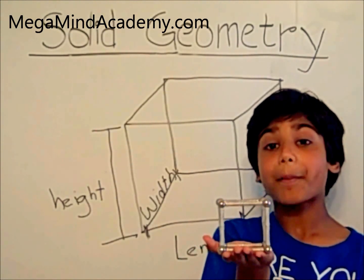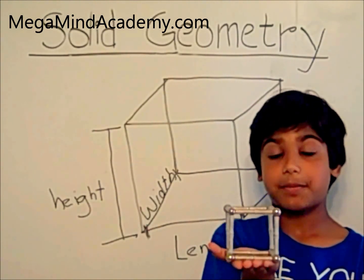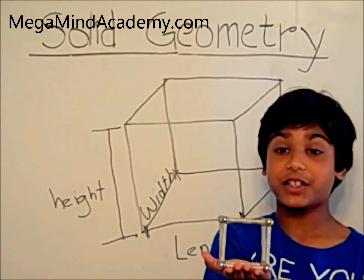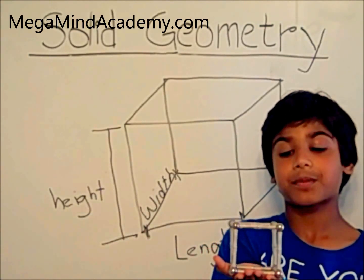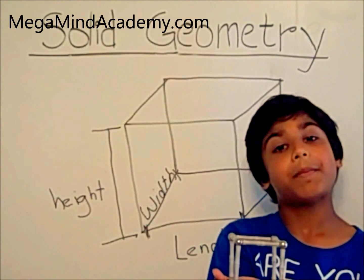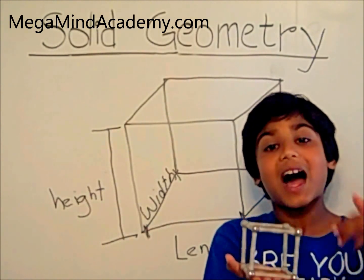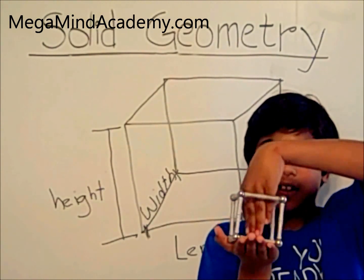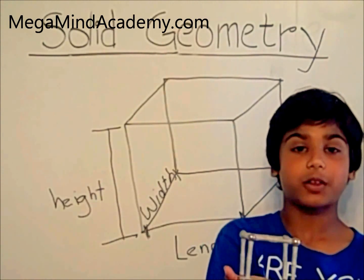There are two properties of 3D shapes. The first one is volume, and the second one is surface area. The volume is the capacity. For example, how much water could this cube hold?